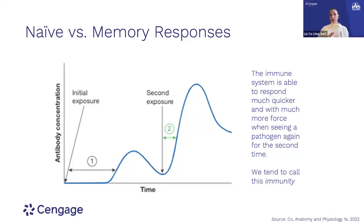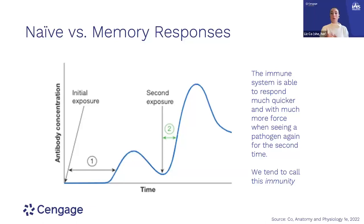The building up of this memory response is what we'd typically call immunity. Immunity doesn't mean you're never infected or never experience a symptom. It means your immune system is primed and going to be faster and better able to eliminate the pathogen in subsequent infections.